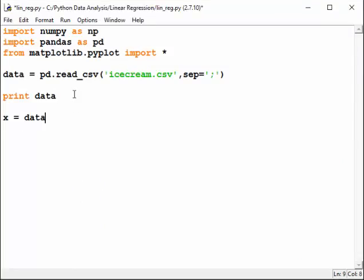Let's define our variables. x is our independent variable, the temperature. y our dependent variable, sales of ice cream.